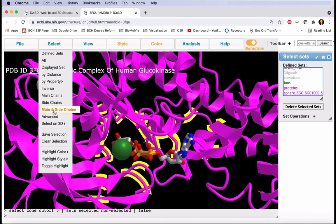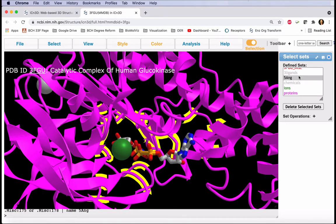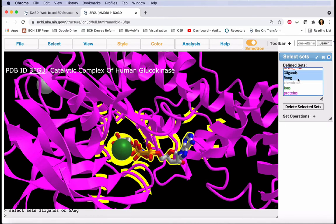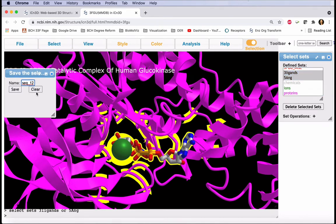Let's save this selection using the Select menu, and I'll call this Five Ang. To combine these two selections, I can Command or Control-Click on both of these, and save this new combined selection, which we'll call 5A Full.